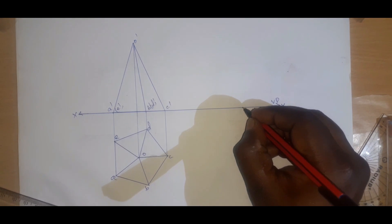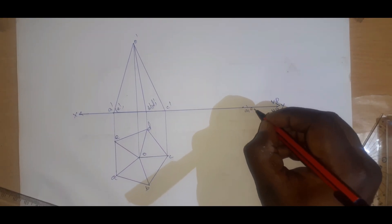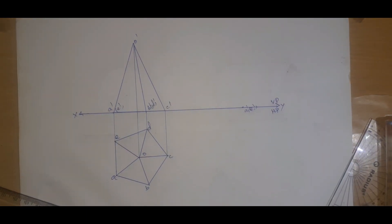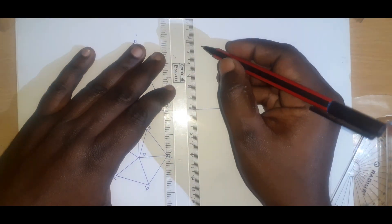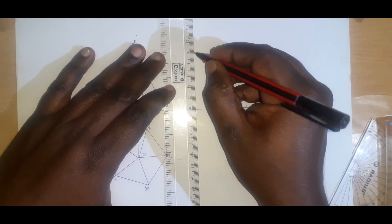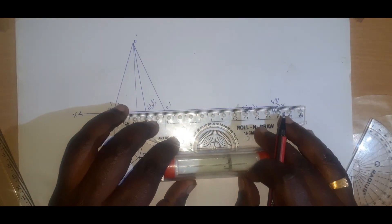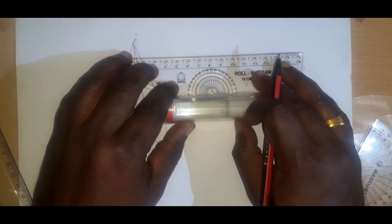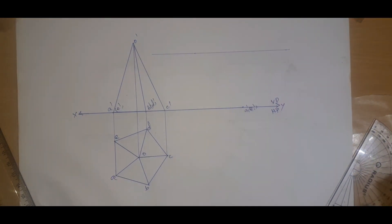Now I am going to fix a point here. This is A1 dash and E1 dash — the point we have fixed. Now what I am going to do is mark a 50 mm above line here. I mark 1, 2, 3, 4, 5 — this is the line. Now I draw a locus — that means a parallel line to the XY line — I draw a thin line here.